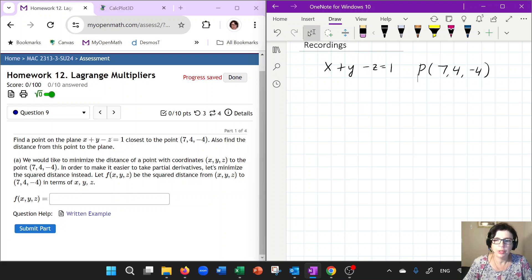Hello, guys. In this video, we are going to take a look at finding a point on the plane x plus y minus z equals 1 that is closest to the point, and I call it P, with coordinate 7, 4, negative 4. So this problem can actually be solved different number of ways, but we are going to use the method of Lagrange multipliers to solve this problem today.